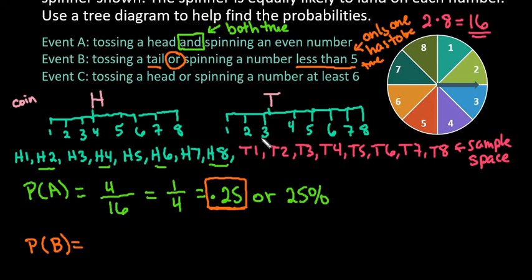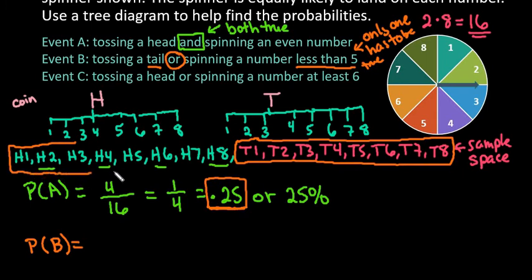With our tails, all of these would be included, so all 8 of these tails would be included in this situation. Then we would come over here and look for our heads that are less than 5. Less than does not include 5, so we would only have these 4 numbers here. I have a total of 4 plus 8 more, so that gives me 12 out of 16, which equals 0.75.